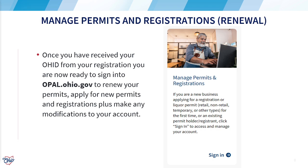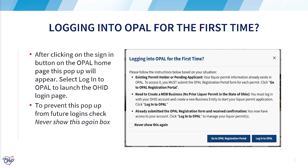Once you have received your link for your OHID, please create your username and password to log on to opal.ohio.gov to begin your renewal application. You will be taken to a page where you will have the option of going back into the registration portal. But since we are already registered, please click on the never show this again button before clicking on log into OPAL.